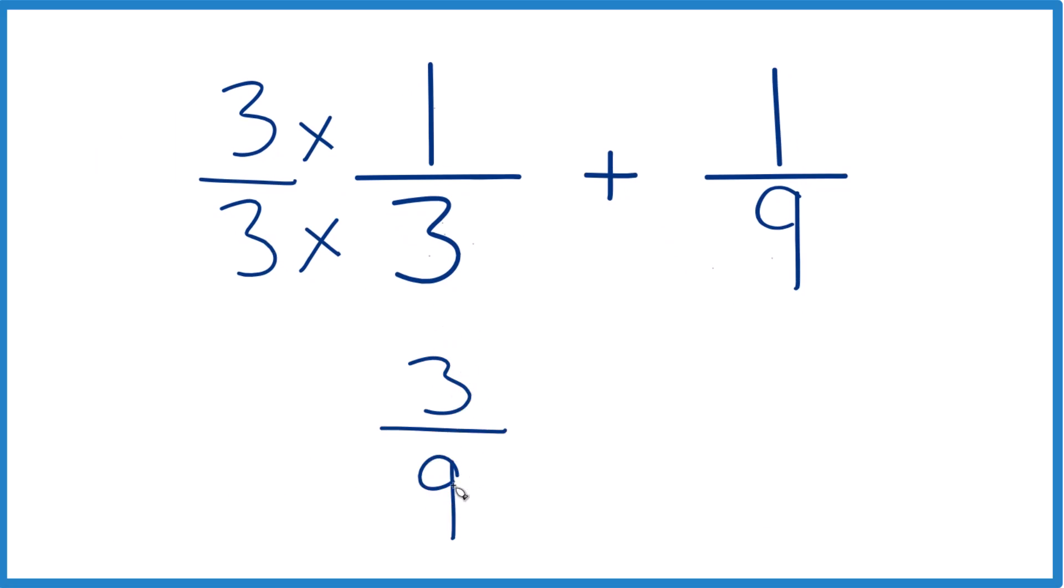And 3 ninths, that's an equivalent fraction to 1 third. They have the same value, just written a little bit differently. We'll add to that our 1 ninth. And now, remember, we have the same denominator, so we add the numerators.